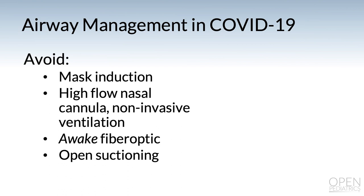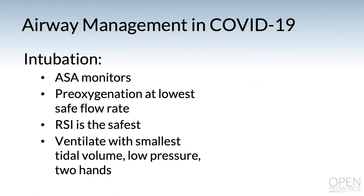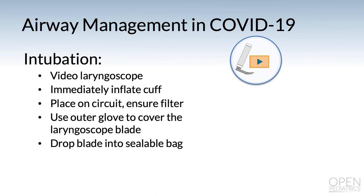Use the lowest possible gas flow to maintain oxygenation. While pre-oxygenating, use two hands on the mask at the lowest oxygen flow that is safely possible. For intubation, pre-oxygenate at the lowest safe flow rate. Rapid sequence induction is the safest — use RSI without manual ventilation. If you must ventilate, do it with the smallest tidal volumes at the lowest pressure using two hands. Intubate using a video laryngoscope. As soon as you're finished intubating, immediately inflate the cuff and place the circuit on the end of the endotracheal tube, making sure there is a filter on that circuit.